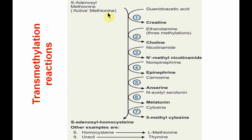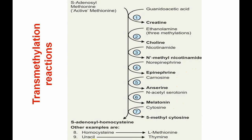The active methionine transfers the methyl group to a methyl acceptor, converting it to S-adenosyl homocysteine. Important compounds synthesized via transmethylation include: guanidoacetic acid methylated to creatine; ethanolamine accepting three successive methyl groups to form choline; nicotinamide converted to N-methyl nicotinamide; norepinephrine converted to epinephrine; carnosine to anserine; N-acetyl serotonin to melatonin; cytosine to 5-methylcytosine; homocysteine converted to L-methionine; and uracil converted to thymine.